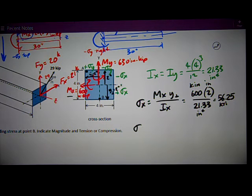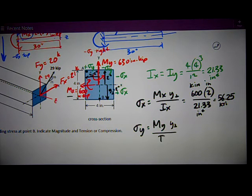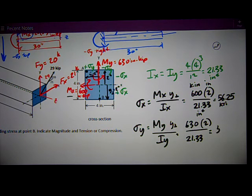Sigma Y can be calculated the same way, just MY times that perpendicular distance, which happens to be an X distance, but I just think of it as a perpendicular distance, divided by IY. MX is 630 times that same perpendicular distance of 2 divided by 21.33. Units are all the same. This number works out to be 59.06 KSI.